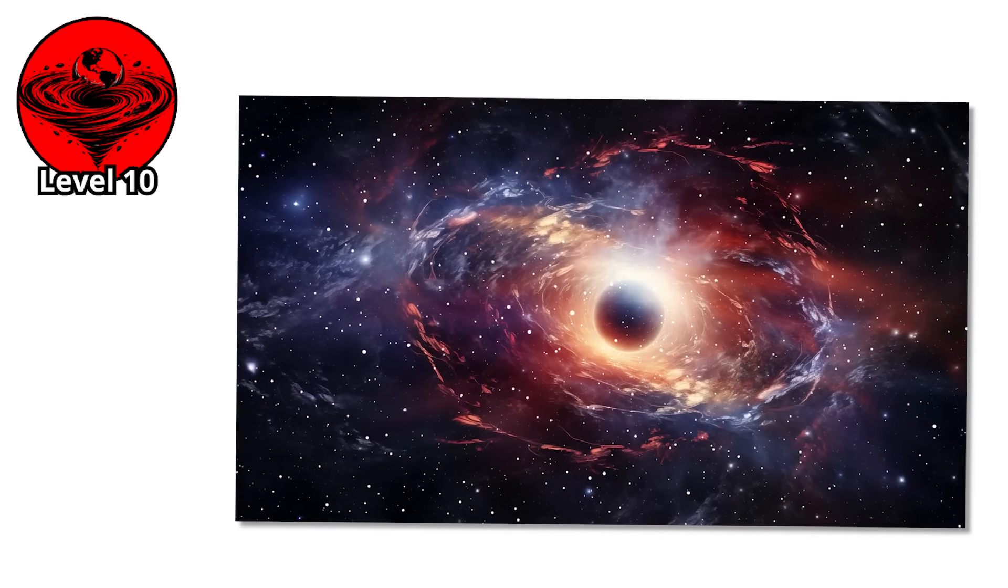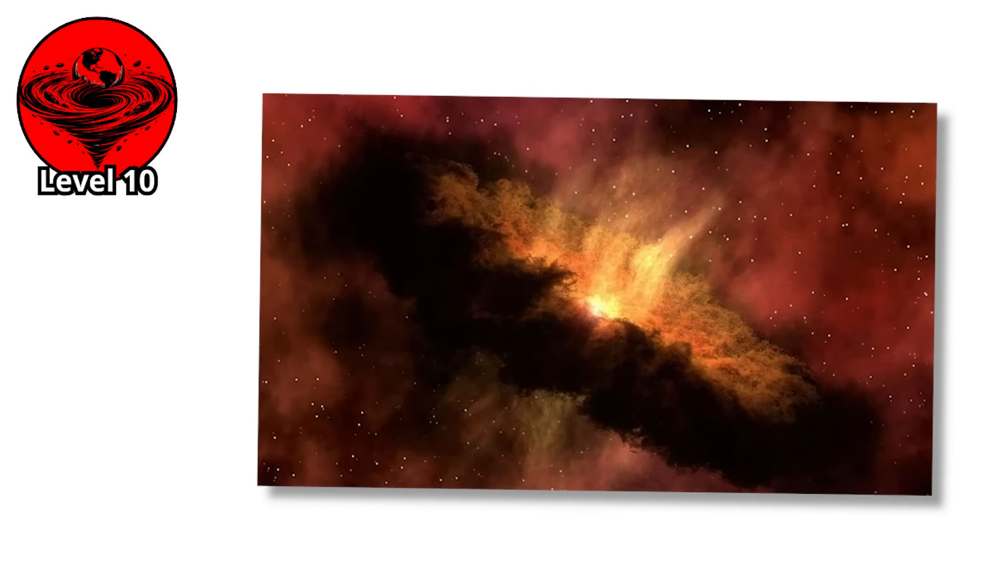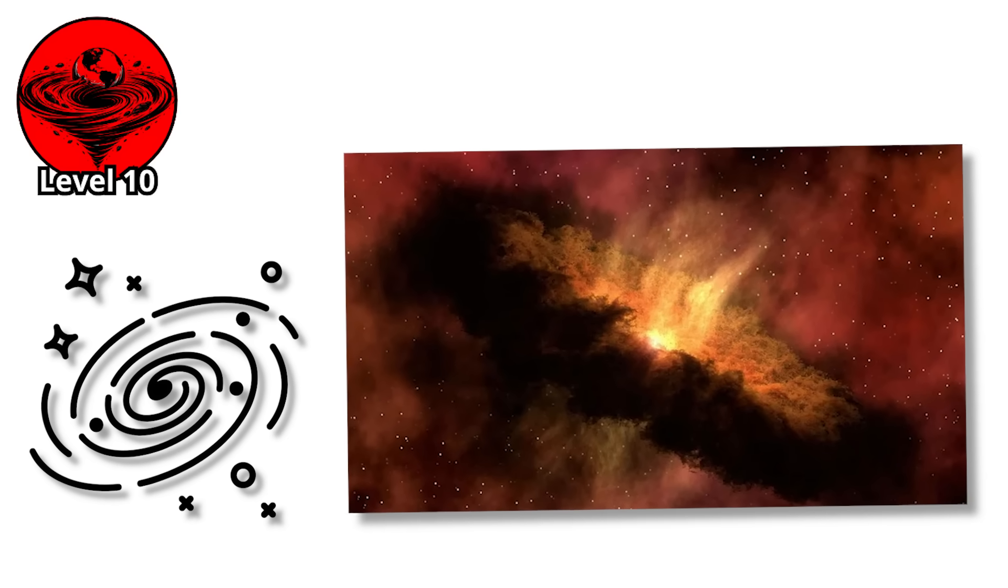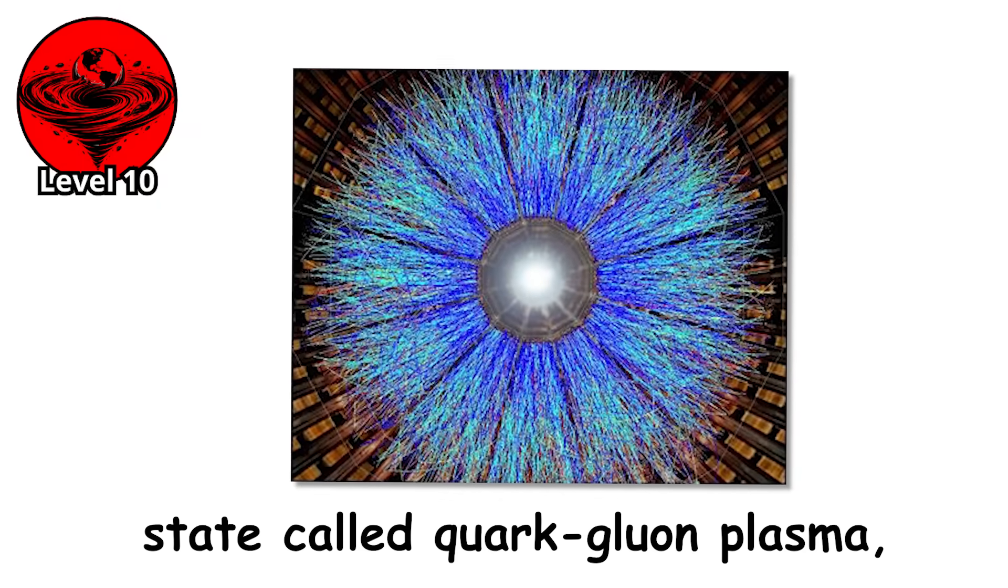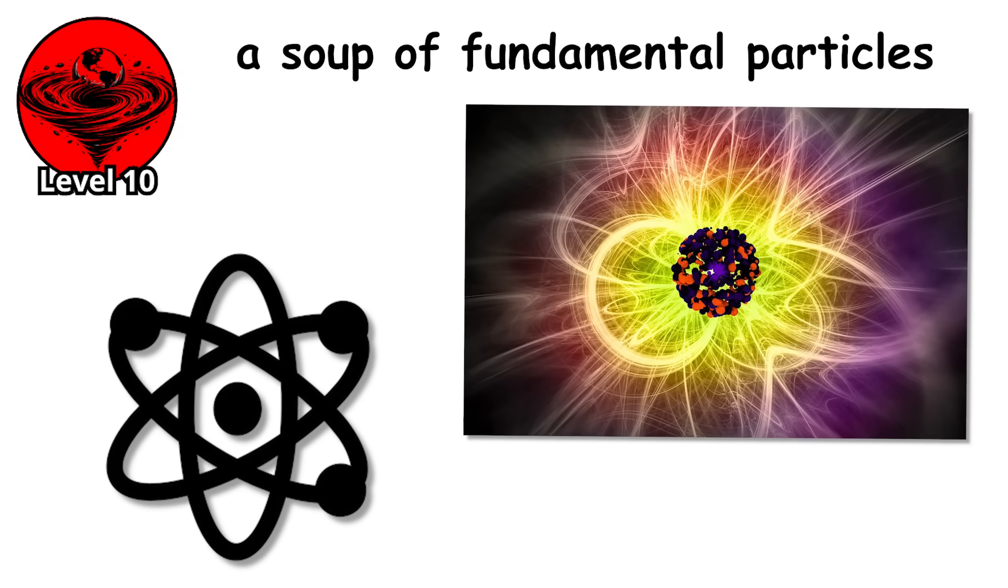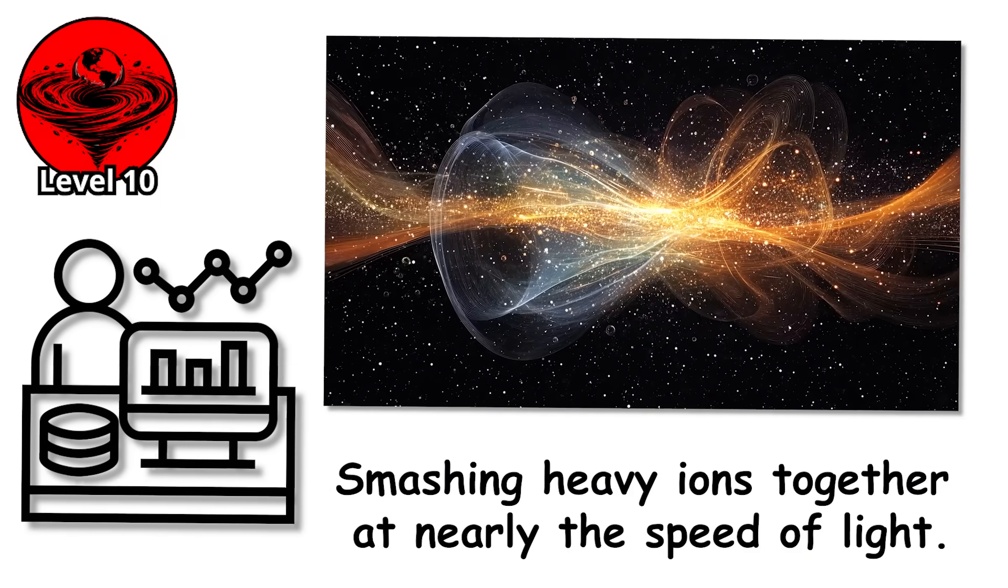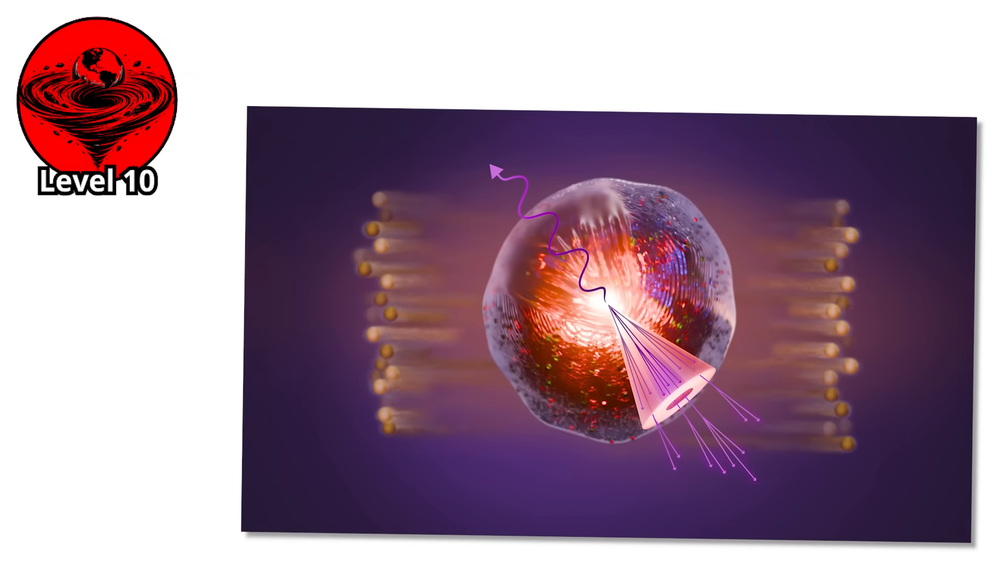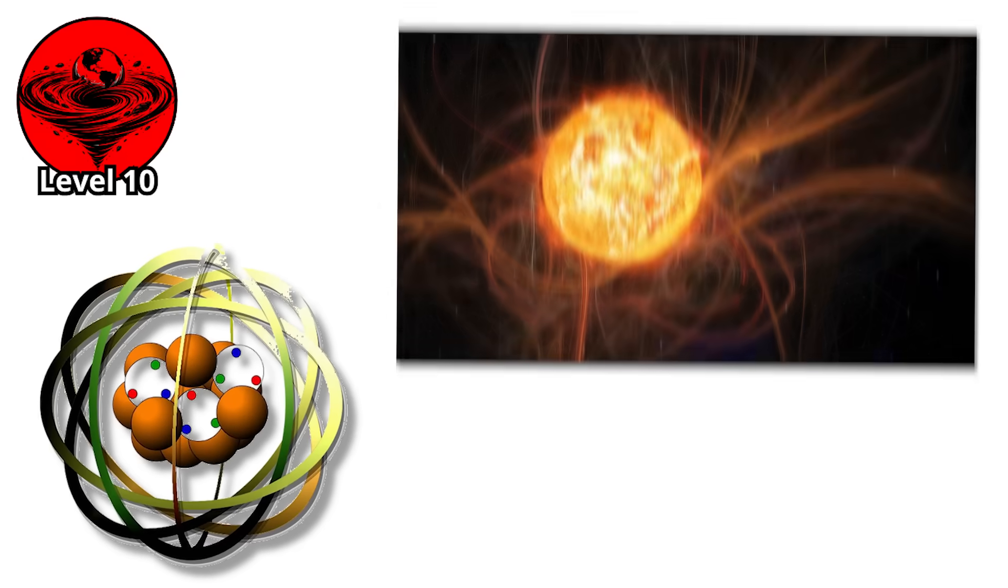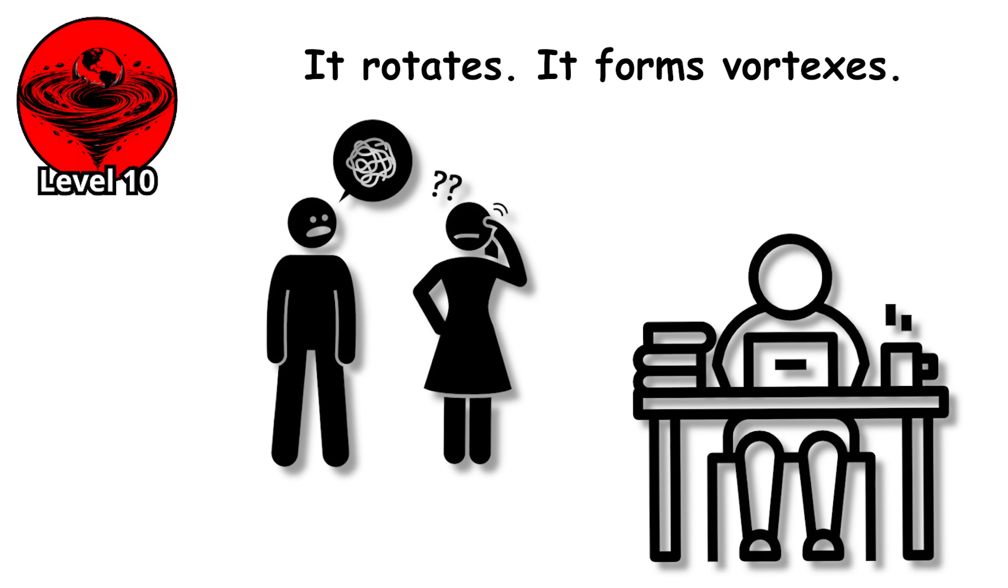Level 10. We've reached the edge of known physics and stepped into theoretical territory that makes everything else look ordinary. In the first microseconds after the Big Bang, the universe was so hot and dense that matter as we know it couldn't exist. Instead, there was a state called quark-gluon plasma, a soup of fundamental particles that hadn't yet cooled enough to form protons and neutrons. Scientists have recreated this state in particle accelerators by smashing heavy ions together at nearly the speed of light. For a fraction of a second, they produce a tiny droplet of quark-gluon plasma, smaller than an atom, hotter than the core of the sun. And when they study its behavior, they found something bizarre. It rotates, it forms vortexes.